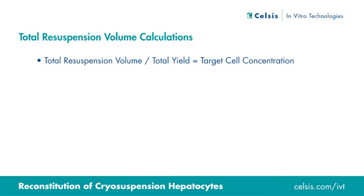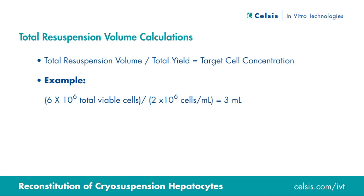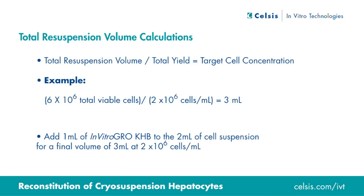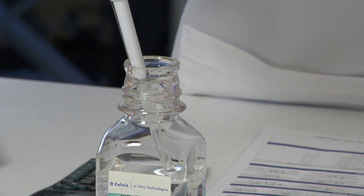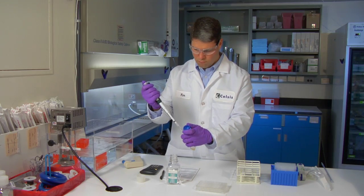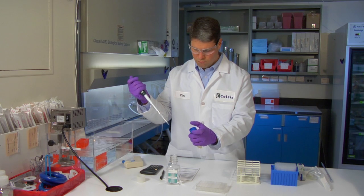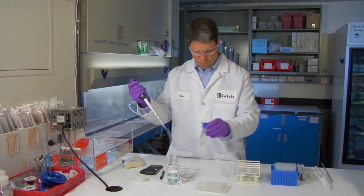In order to calculate the final volume needed, the total live cell number of 6×10⁶ cells is divided by our desired target cell concentration of 2×10⁶ cells per milliliter. The resuspension volume is 3 milliliters. The original suspension volume of 2 milliliters is subtracted from the final resuspension volume of 3 milliliters to determine how much in vitro grow KHB must be added — add 1 milliliter of in vitro grow KHB to the original suspension volume in the conical tube. The final cell concentration will now be 2×10⁶ cells per milliliter.